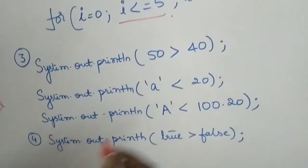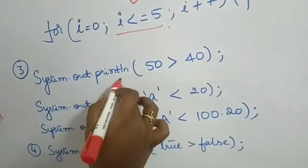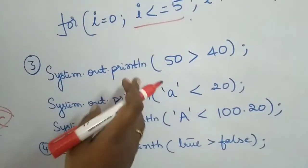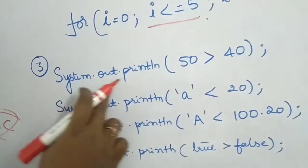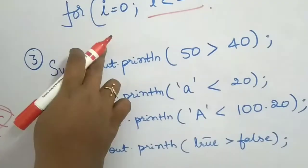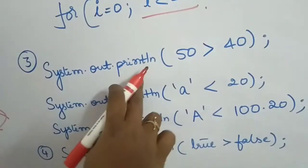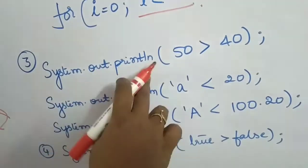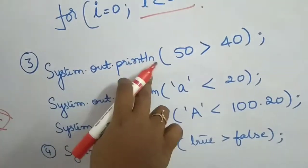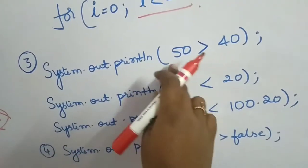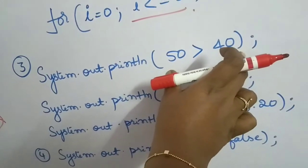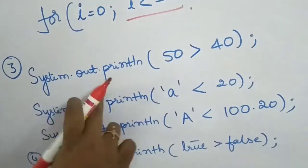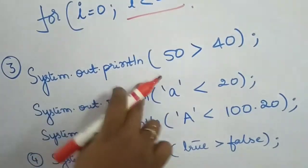I can also use them in System.out.println. For people who have come from a C or C++ background, this is like printf in C or cout in C++. It will print whatever is given inside the parentheses on the console output screen. That is the purpose of System.out.println.